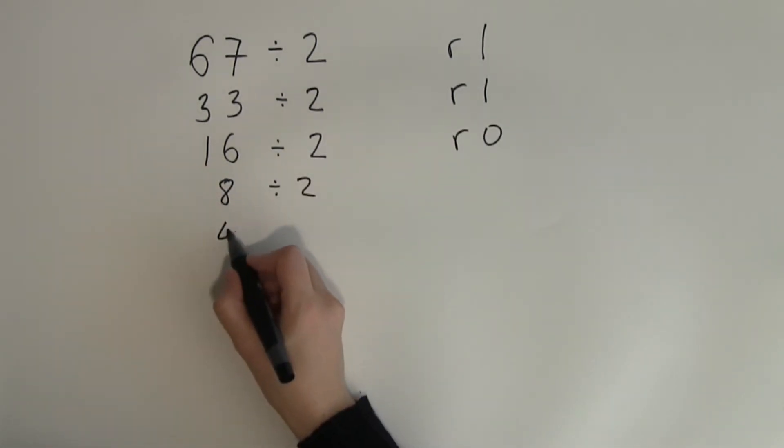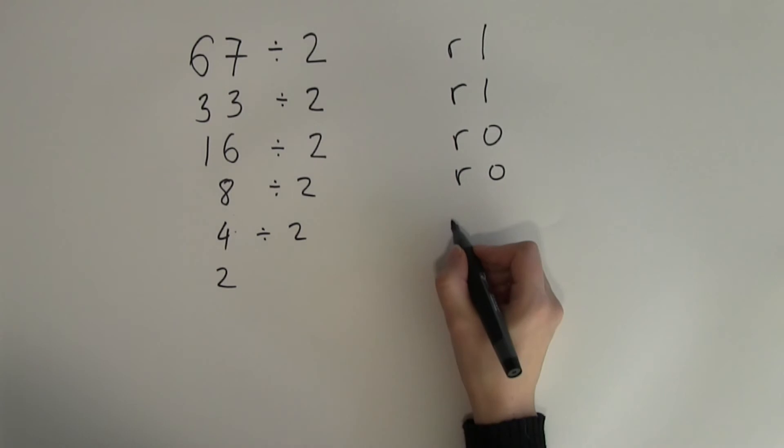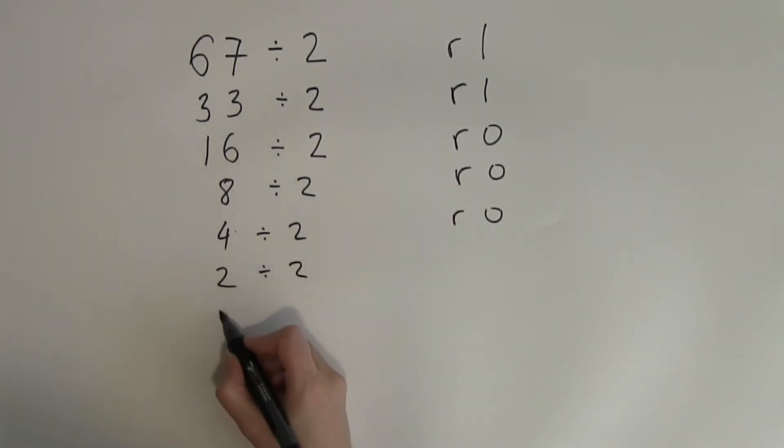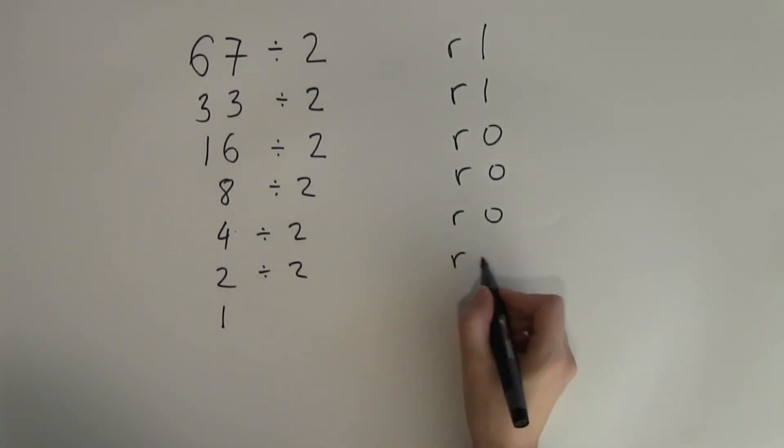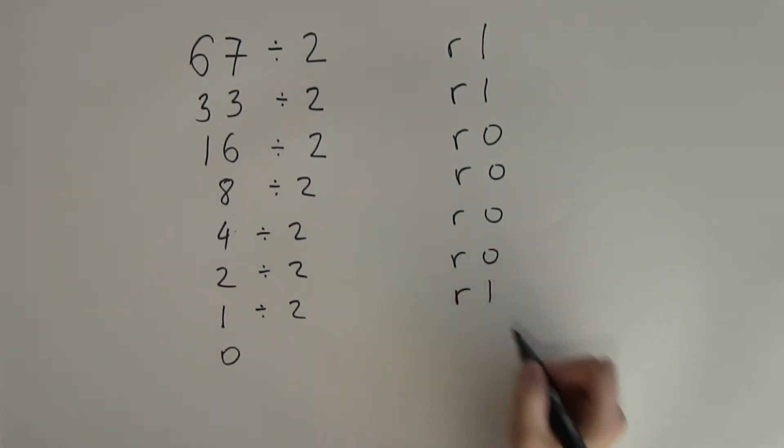8 divided by 2 gives 4, remainder 0. 4 divided by 2 gives 2, remainder 0. 2 divided by 2 gives 1, remainder 0. 1 divided by 2, remainder 1.